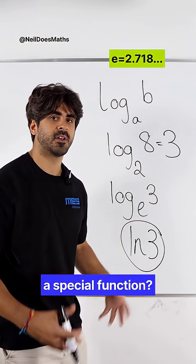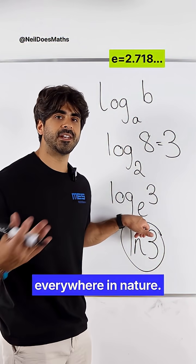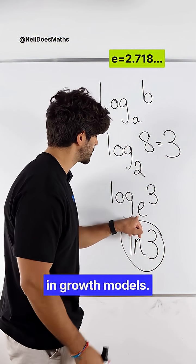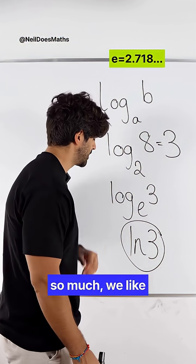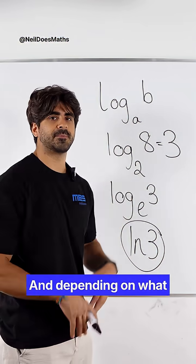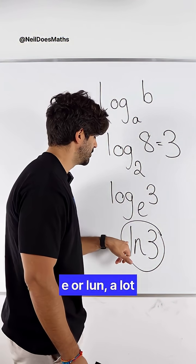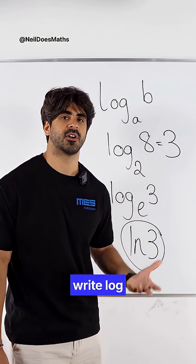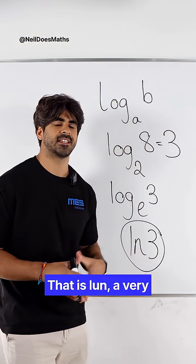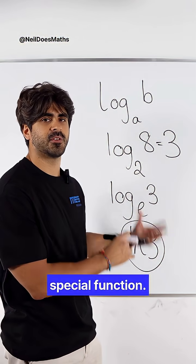Now, why does it get a special function? Well, e occurs everywhere in nature. We use it a lot in growth models. And because we use it so much, we like to absorb it into ln. And depending on what field of mathematics you're dealing with, log base e or ln, a lot of mathematicians just write log. And there we go. That is ln, a very special function.